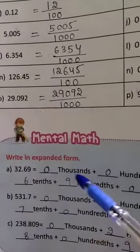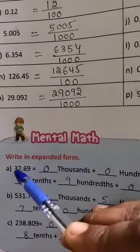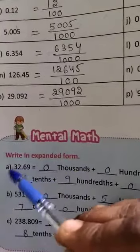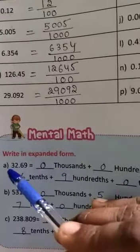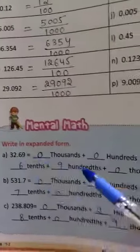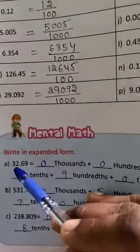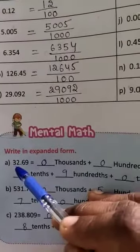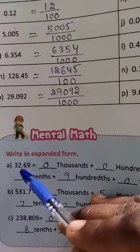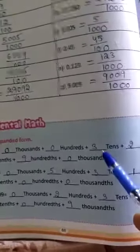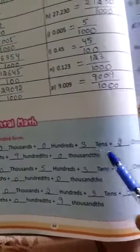So first: thousands place is 0, hundreds place is 0, tens place is 3, ones place is 2. So 3 tens, 2 ones.